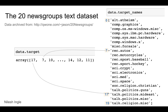These are the labels for the 20 targets. In the previous slide the target output showed values like 17, 7, 10, etc. Each number represents a label — for example, 7 represents `rec.autos` and 17 represents `talk.politics.mideast`. These are the categories or classes for each of those texts.